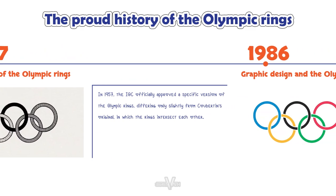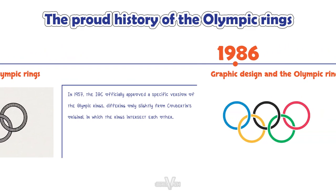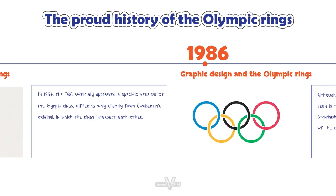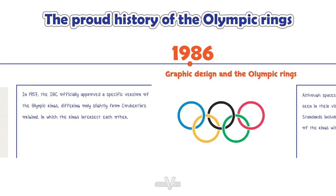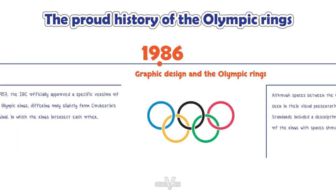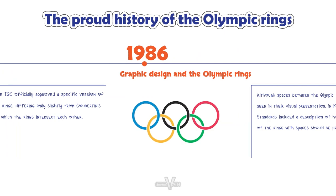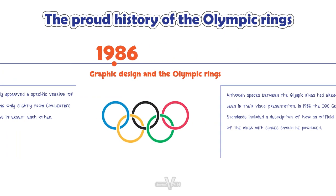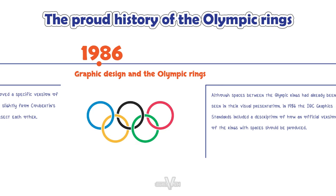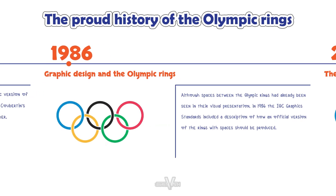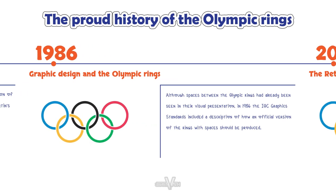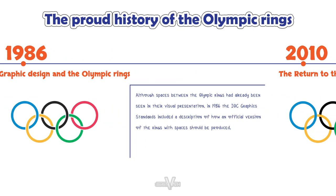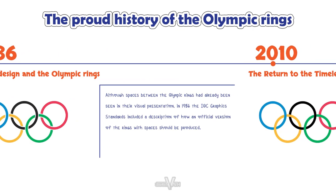1986: Graphic design and the Olympic rings. Although spaces between the Olympic rings had already been seen in their visual presentation, in 1986 the IOC graphics standards included a description of how an official version of the rings with spaces should be produced.